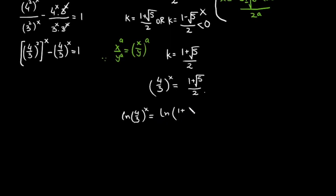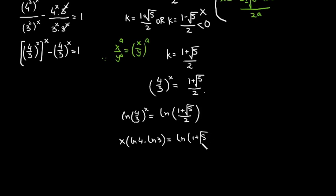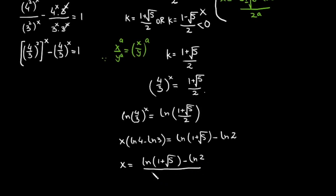So k equals (1 plus root 5) over 2. Since k equals (4/3)^x, taking the natural log of both sides brings x to the front. This gives x times (ln 4 minus ln 3) equals ln(1 plus root 5) minus ln 2. Therefore, x equals [ln(1 plus root 5) minus ln 2] over [ln 4 minus ln 3].